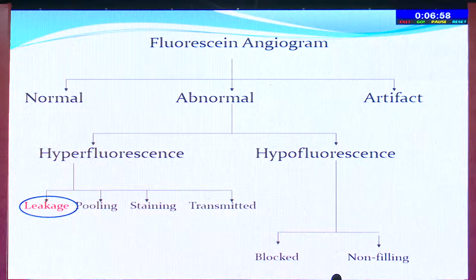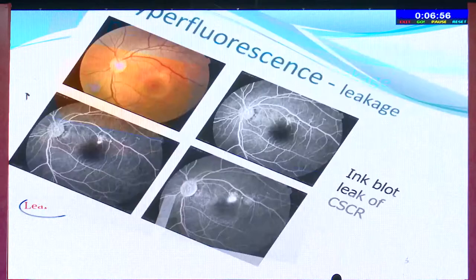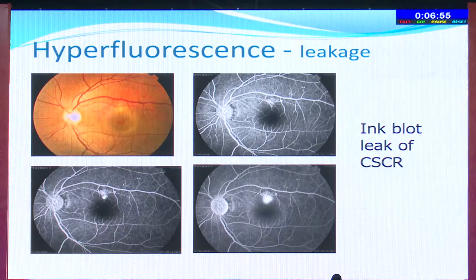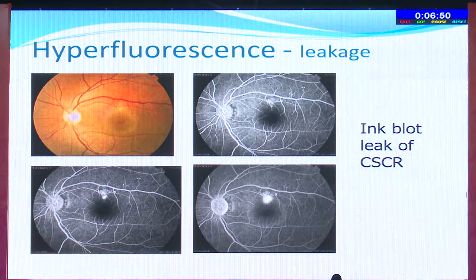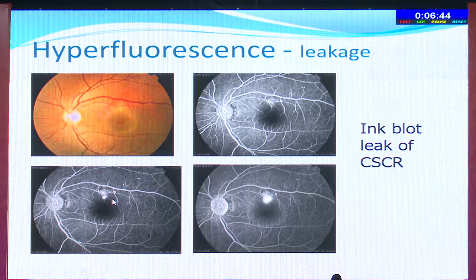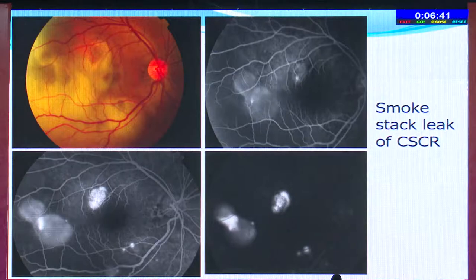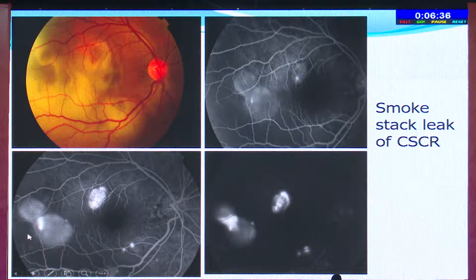The next type of hyperfluorescence is leakage. The classical description of leakage hyperfluorescence is CSCR. As seen here, you can see this pinpoint leak which increases as the phases of the fluorescein angiogram progress. Or you can get multiple hyperfluorescent leaks, as seen here in the case of a typical CSCR.